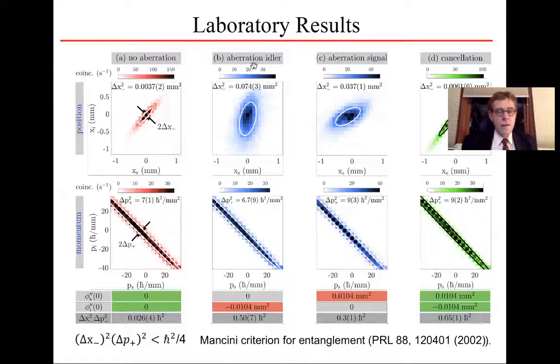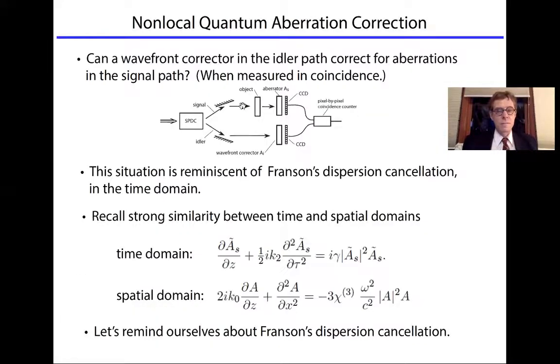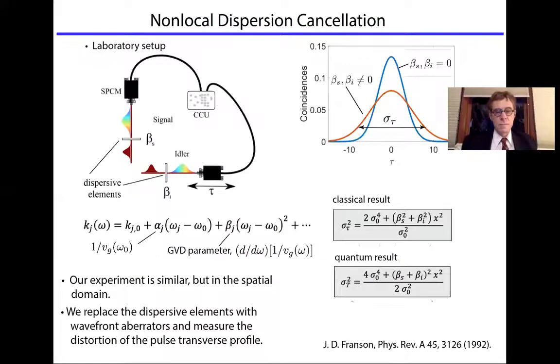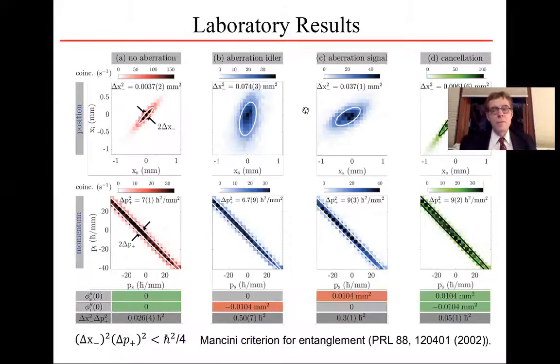If we place an aberrator in the idler arm, the momentum remains correlated, but the position does not. It loses the correlation. If we place an aberration in the signal arm only, we also get distortion in position space.